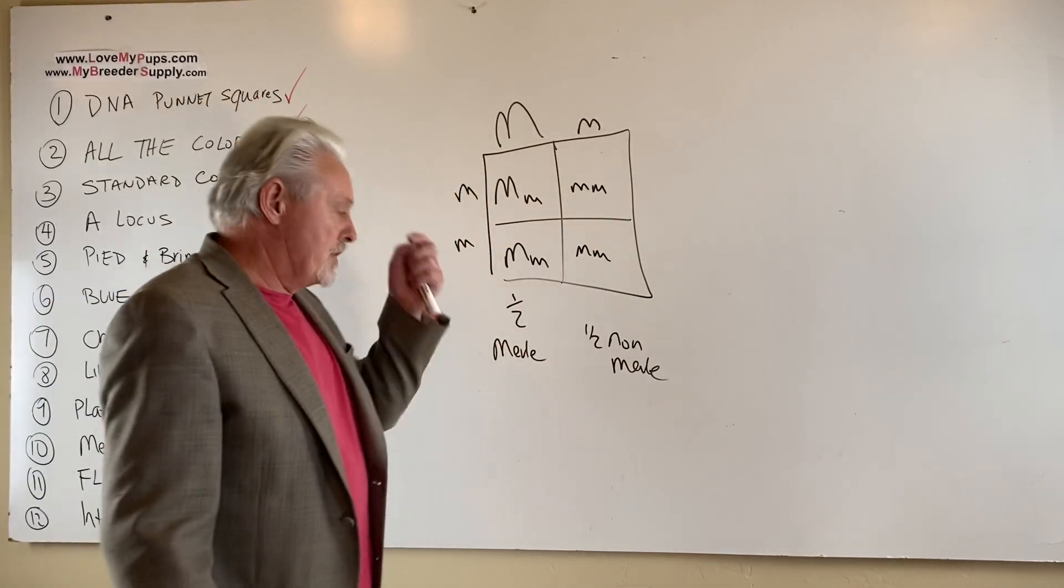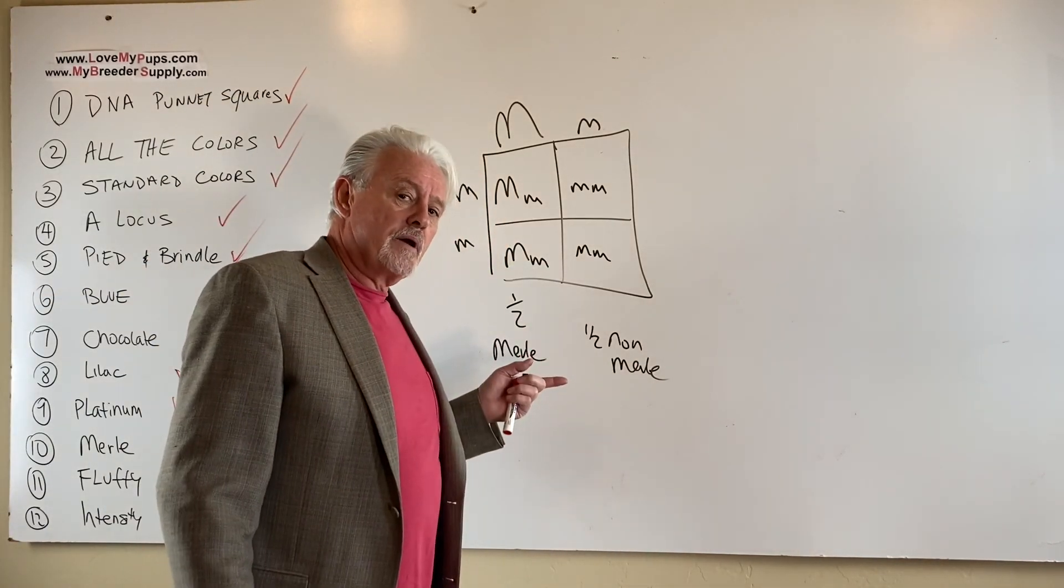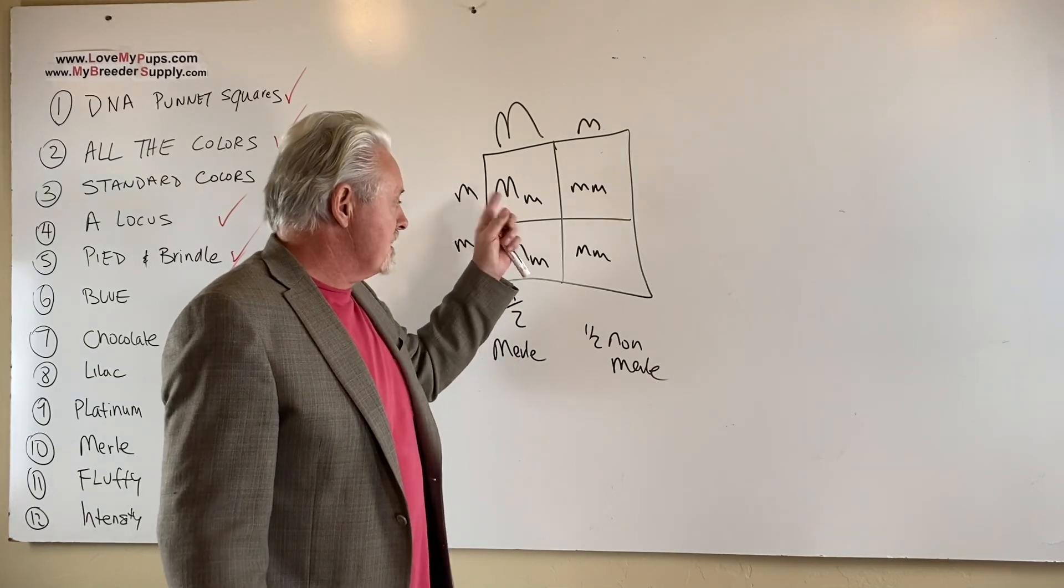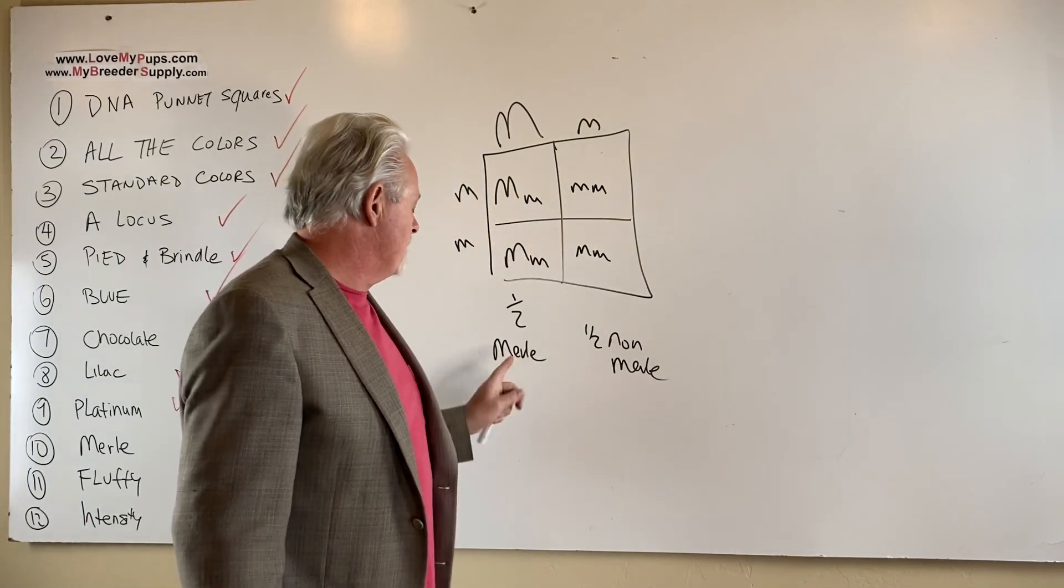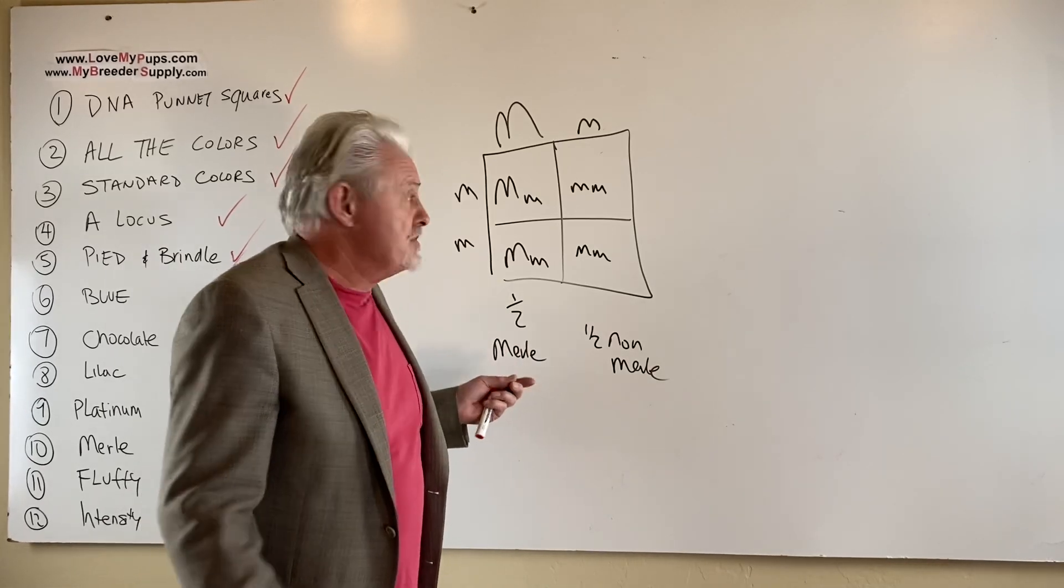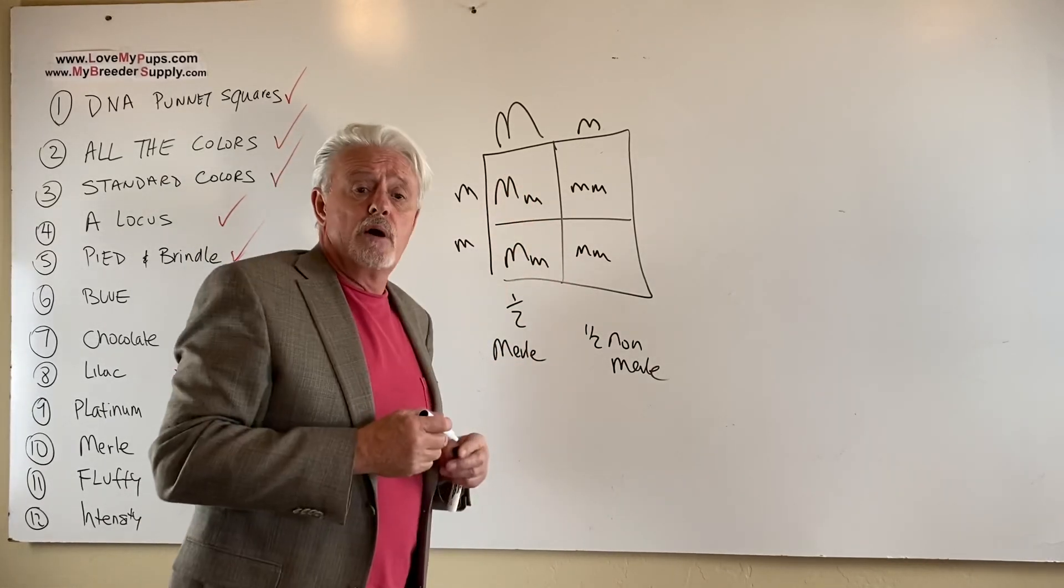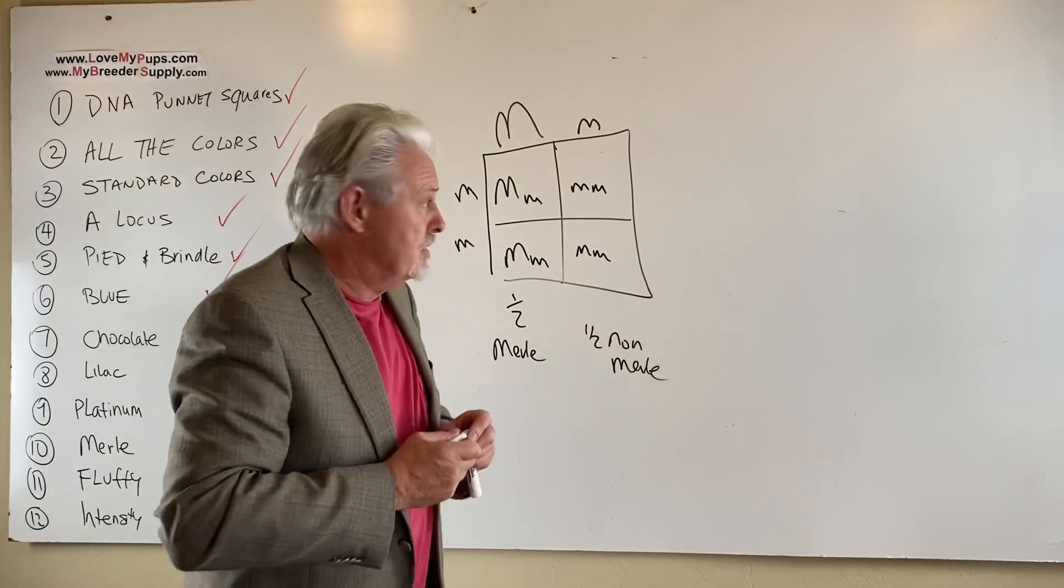As opposed to the other example where you put a Merle carrier to Merle carrier, you ended up with a quarter in trouble, a quarter not Merle and half of them Merles. You still got the half Merles, you just didn't end up with that quarter double Merles that'll get you in trouble. Don't breed a Merle to a Merle.